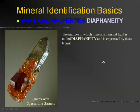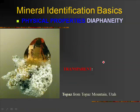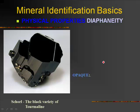Diaphaneity refers to how light goes through a mineral. There are three terms: transparent, translucent, and opaque. Using paper as an analogy — transparent is like saran wrap, translucent is like wax paper, and opaque is like aluminum foil. A transparent mineral lets you see light and objects through it. A translucent mineral allows some light through and will glow with a strong light behind it, but you can't see anything through it. Opaque lets no light through at all. Here we have a lovely transparent topaz, some translucent minerals, and a particularly opaque piece of tourmaline.